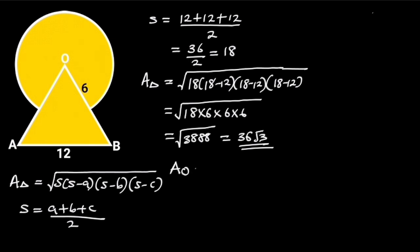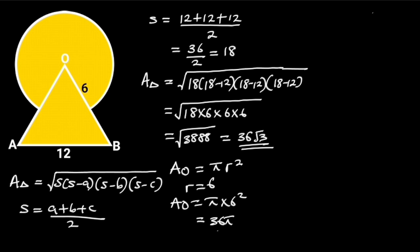Next, let's find the area of the circle. The area of the circle is pi times radius squared. Since the radius of the circle is 6 units, it follows that the area of the circle is equal to pi times 6 squared. 6 squared is 36, so the area of the circle is equal to 36π square units.